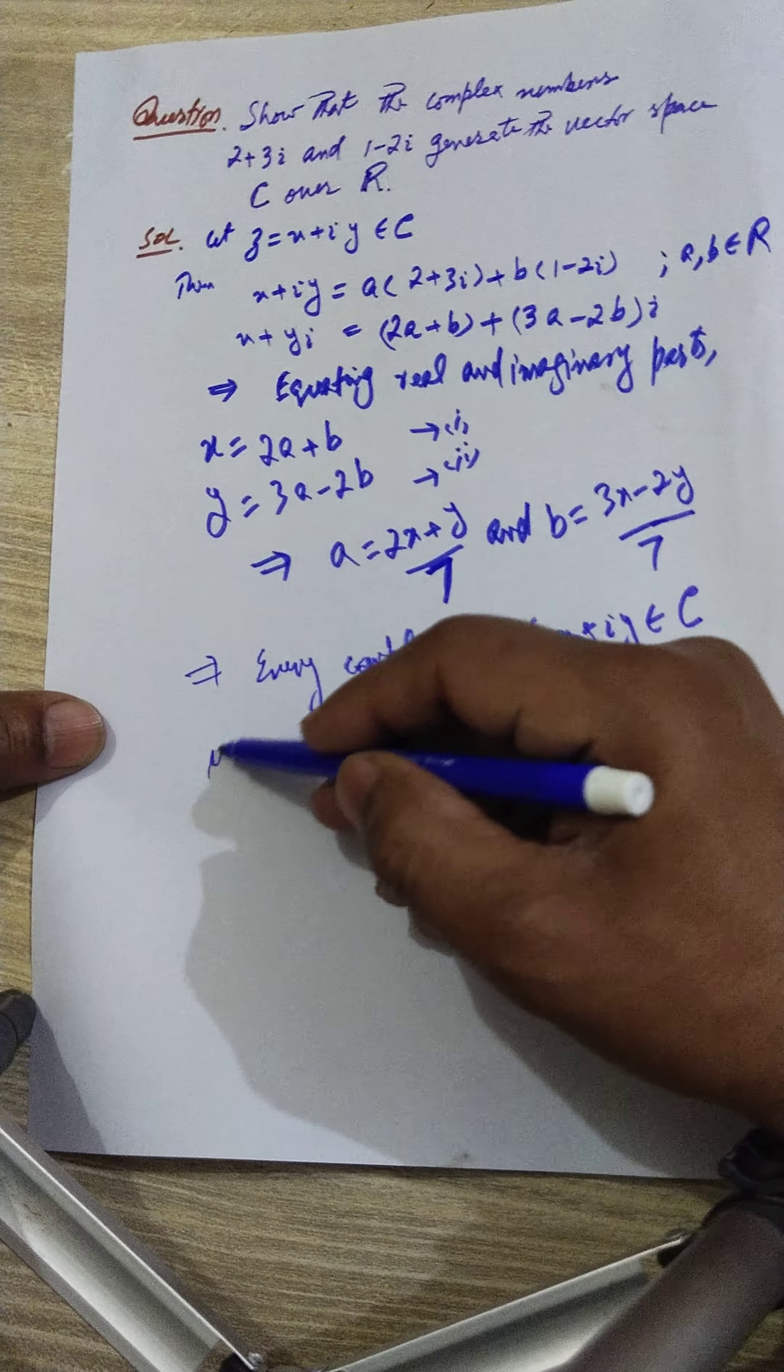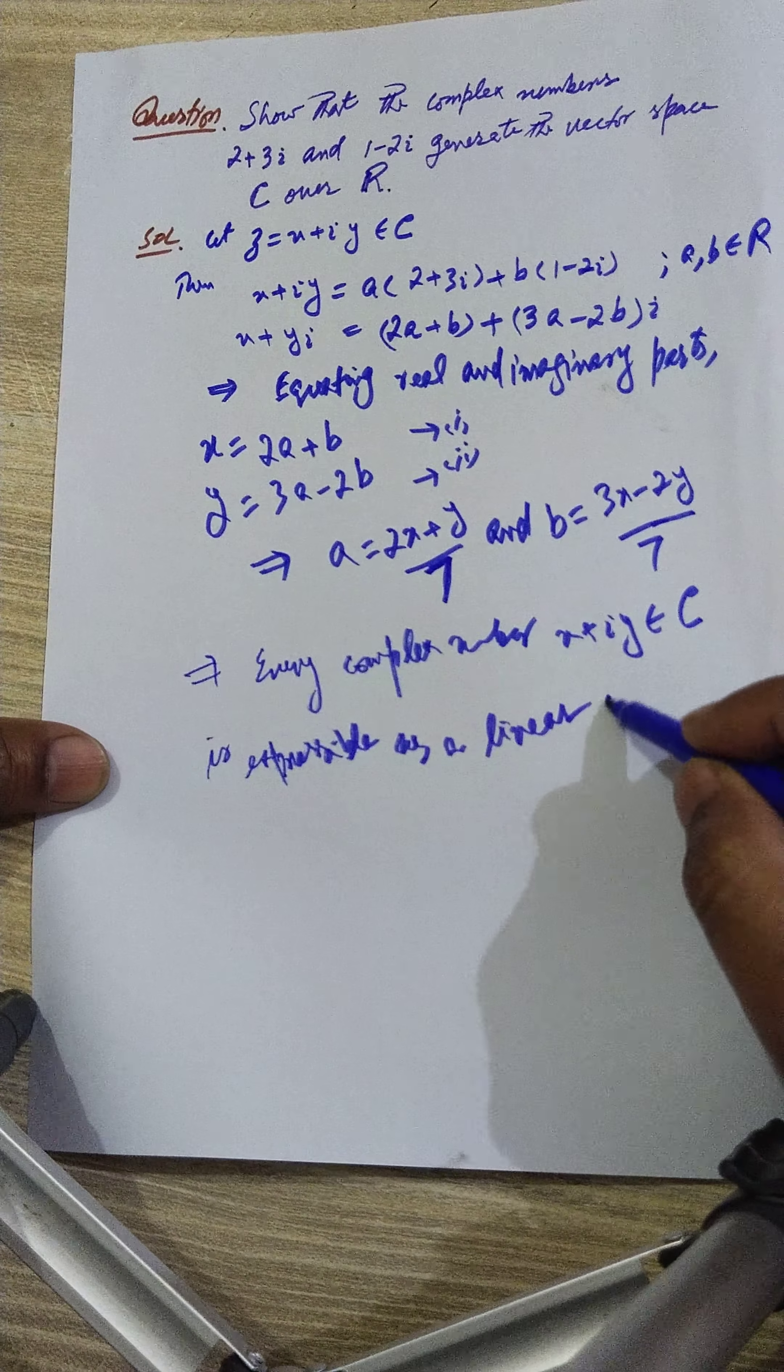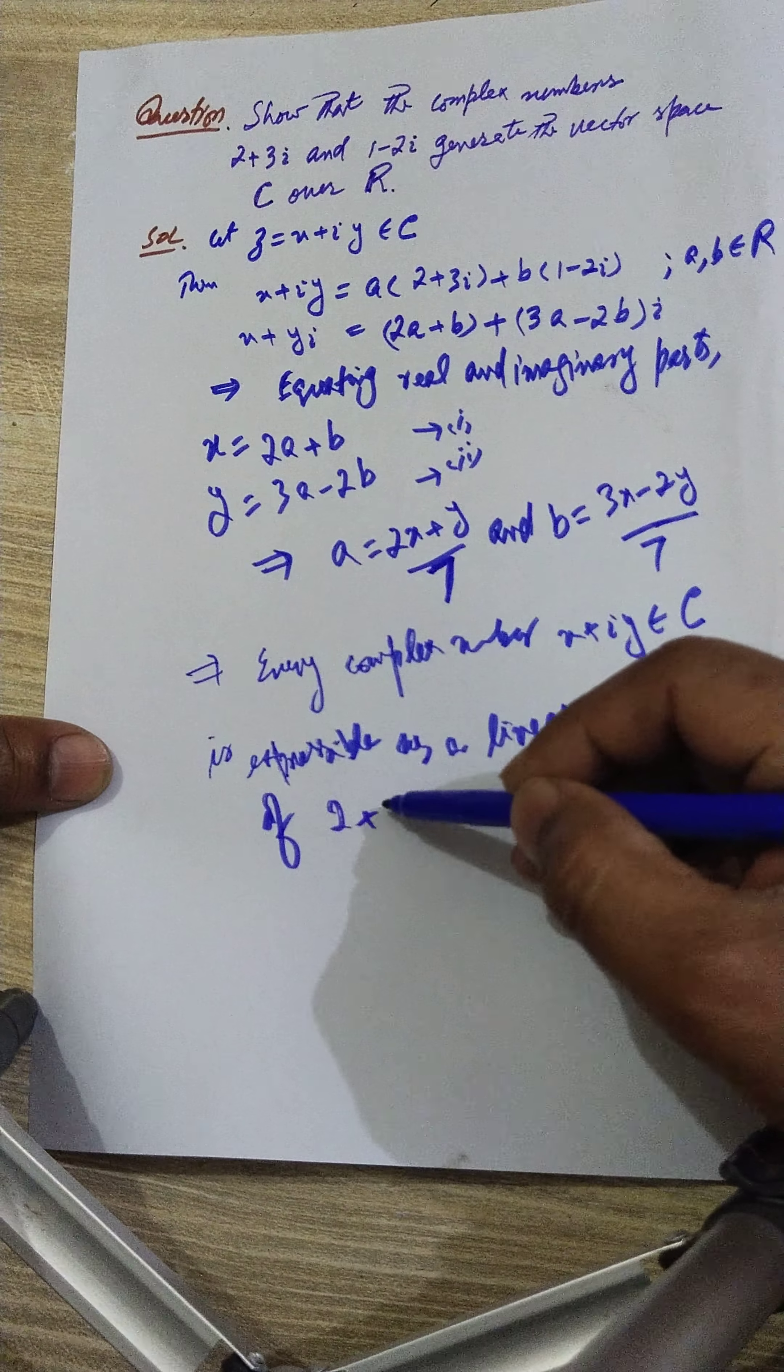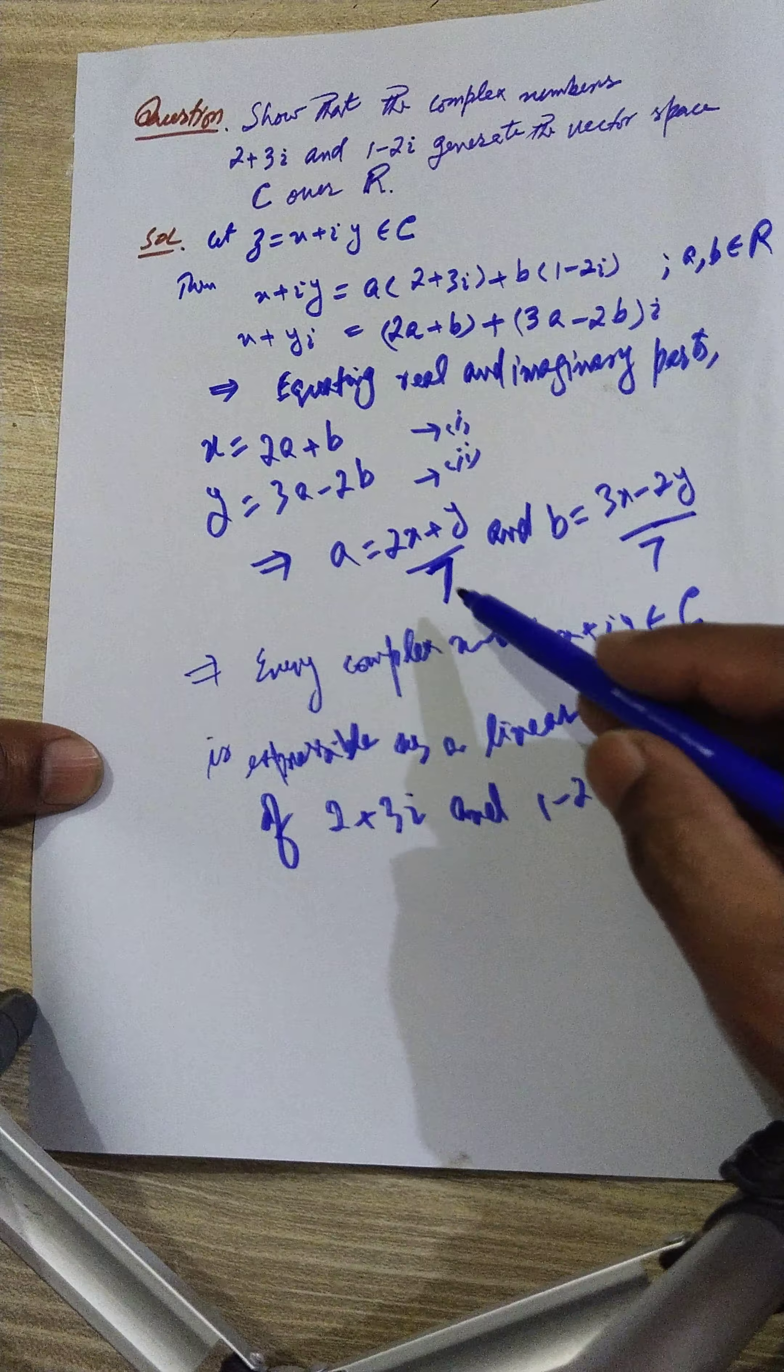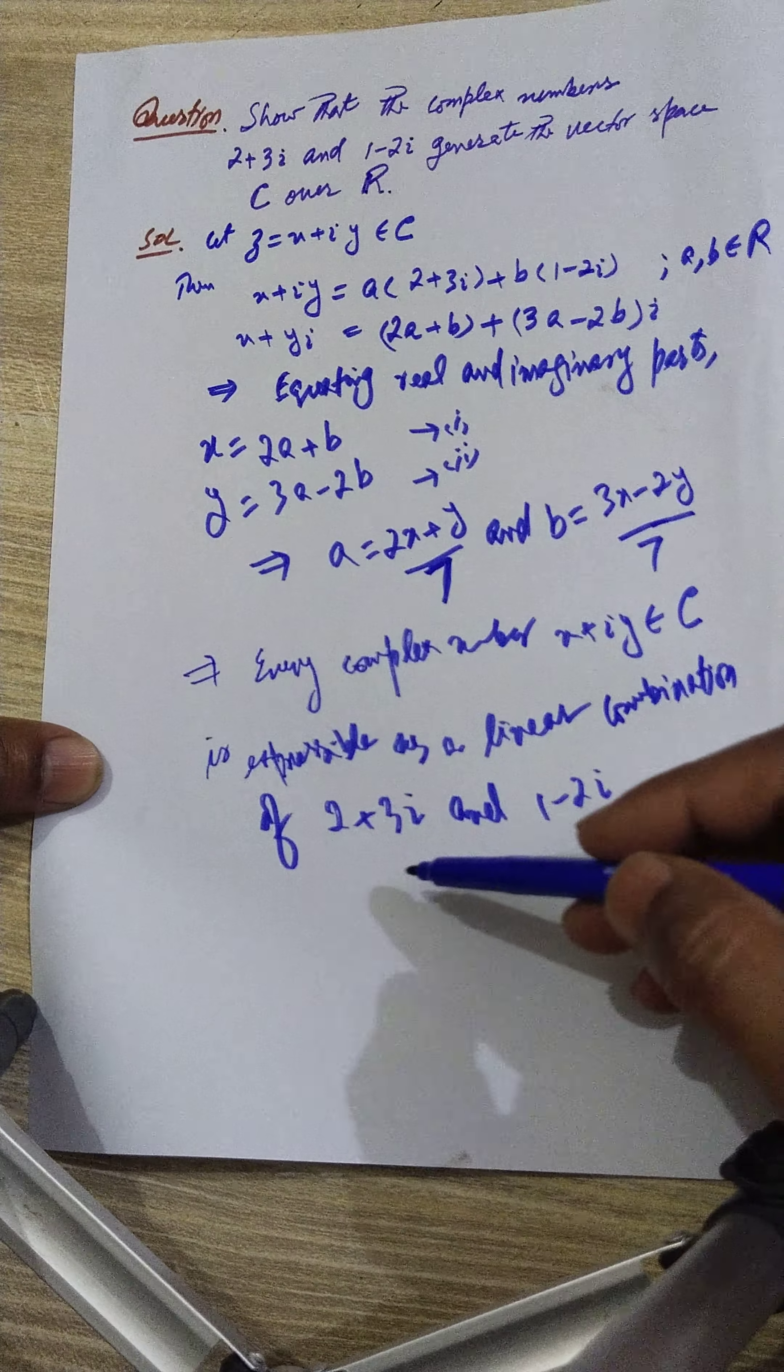It means every complex number, that is x+iy of C, is expressible as a linear combination of these two vectors, which are 2+3i and 1-2i. These two vectors generate C over R.